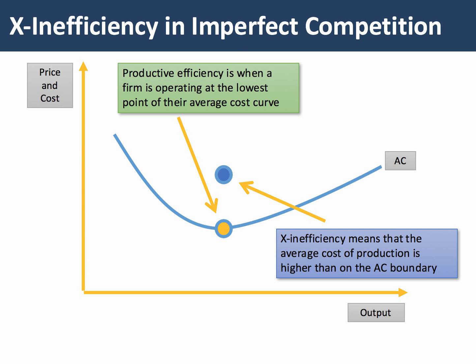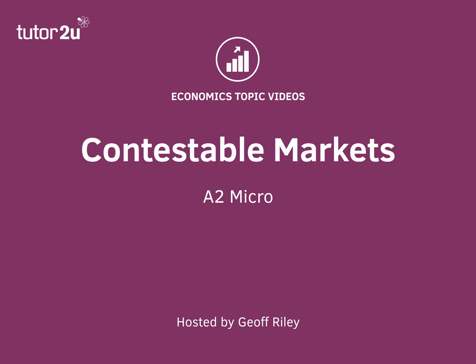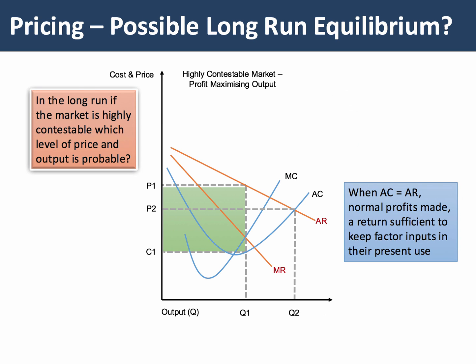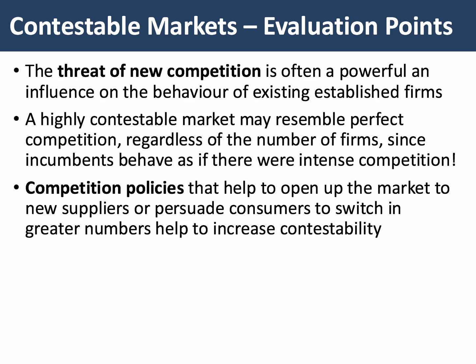Contestable markets are increasingly important — we have separate topic videos on these. Here the outcome is uncertain: a firm could charge price P1 above average cost at a profitable output Q1, but that sends a signal to other firms to engage in hit-and-run entry. That price is allocatively inefficient as it is above marginal cost. However, the threat of competition may cause firms to move to an equilibrium where average cost equals average revenue, normal profits are made, and there's a higher level of output — better news for consumers.